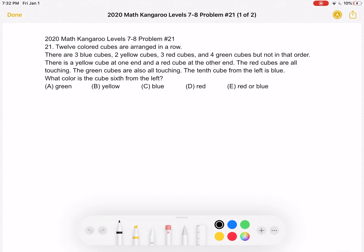What color is the cube sixth from the left? A, green, B, yellow, C, blue, D, red, or E, red or blue.